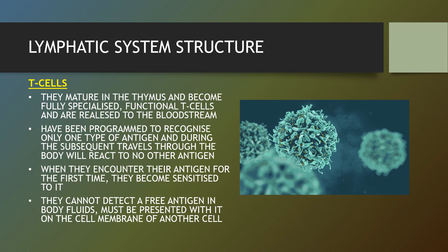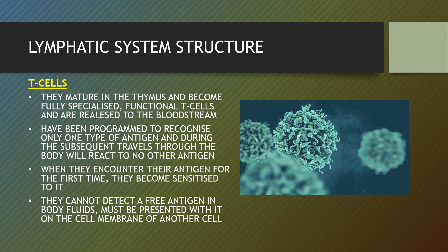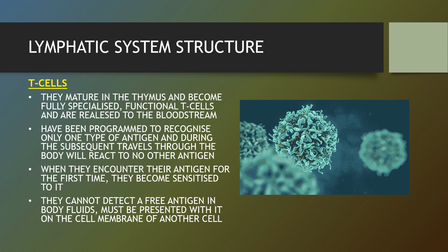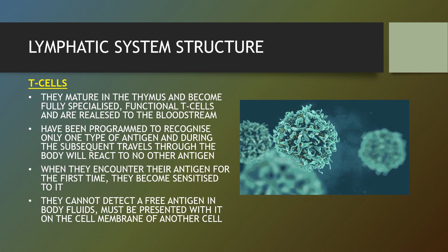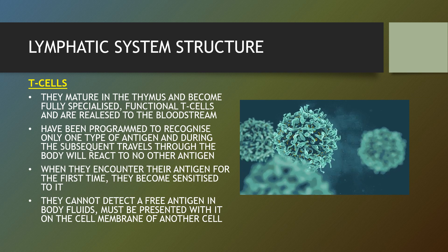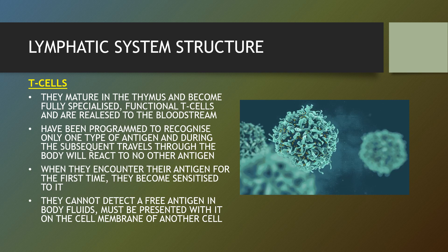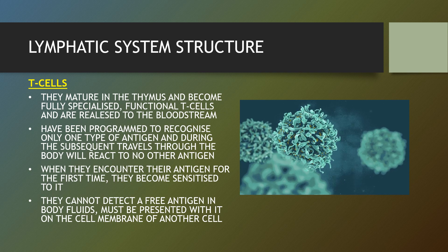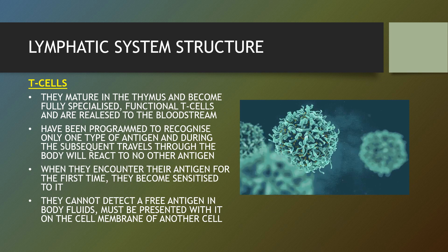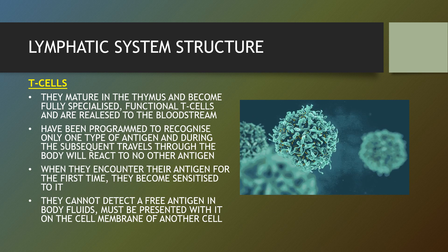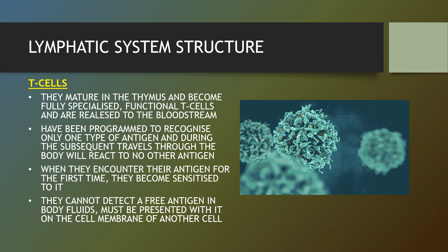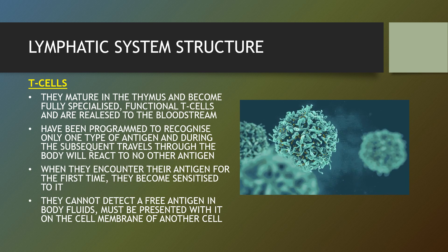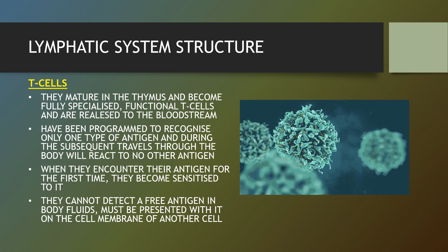T cells are part of the immune system that focus on specific foreign particles. Rather than generically attacking any antigens, T cells circulate until they encounter their specific antigen, and play a critical part in immunity to foreign substances. They mature in the thymus and become fully specialized functional T cells released to the bloodstream. They are programmed to recognize only one type of antigen and will react to no other antigen during subsequent travels through the body. When they encounter their antigen for the first time they become sensitized to it. They cannot detect a free antigen in body fluids; it must be present on a cell membrane or another cell.